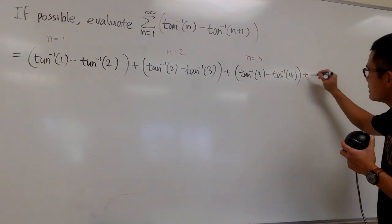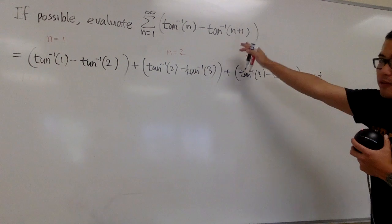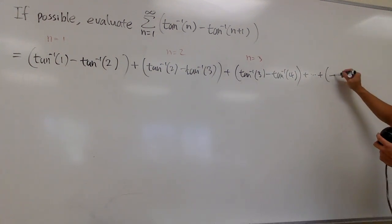So put on plus, let's put on the formula right here. For the nth term, we will have the inverse tangent of n minus the inverse tangent of n plus 1. And then it keeps on going forever.